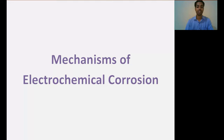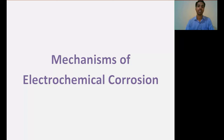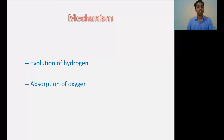Electrochemical corrosion involves flow of electron current between anodic and cathodic areas. The anodic reaction involves dissolution of metal as corresponding metallic ions with the liberation of free electrons. Always remember, on the anode the reaction expressed is oxidation, where metal comes into the solution by dissolution. Depending upon the corresponding environment, the cathodic reaction consumes electrons either by evolution of hydrogen or absorption of oxygen.